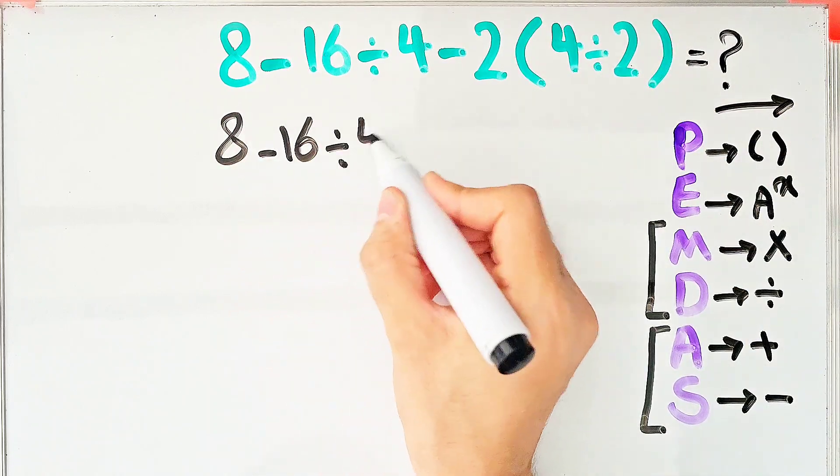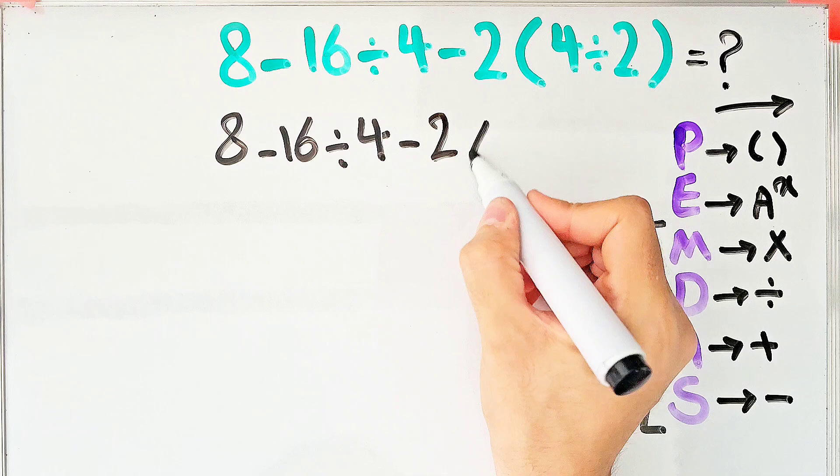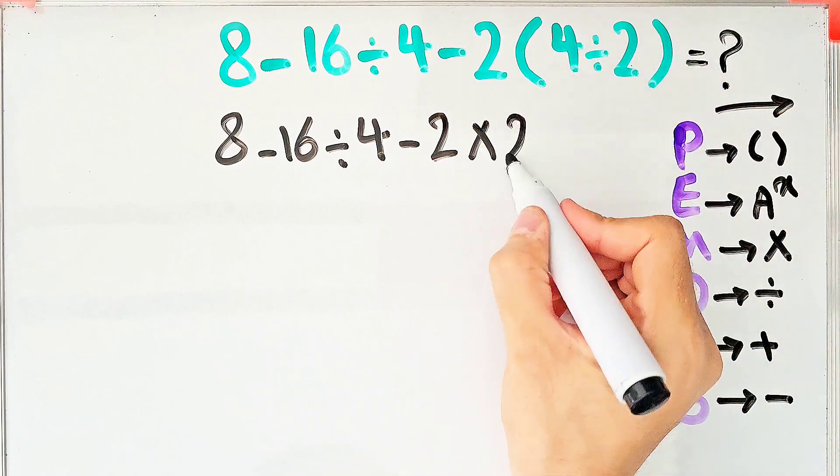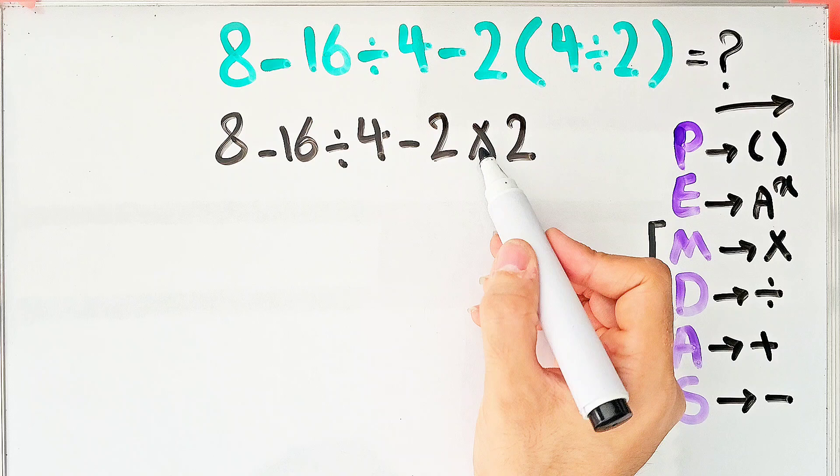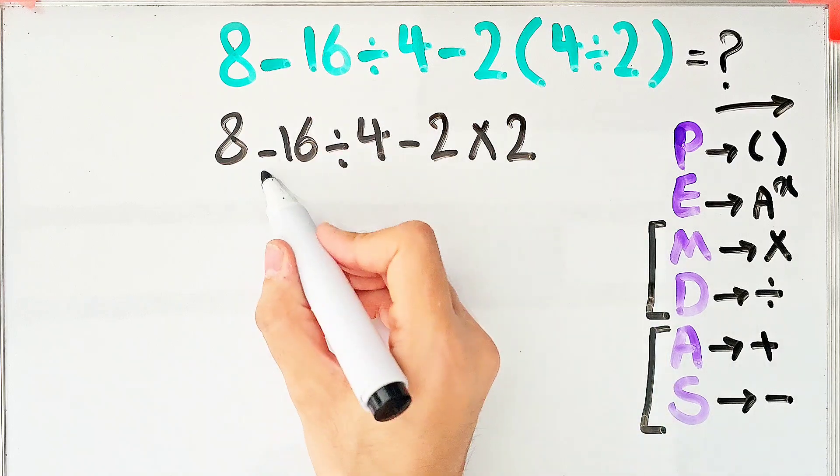8 minus 16 divided by 4 minus 2 then times 4 divided by 2 that equals 2. In this step, we have subtraction, division and multiplication. First, we do this division.